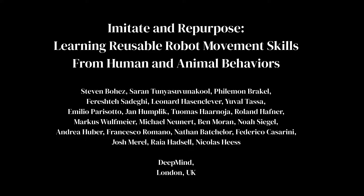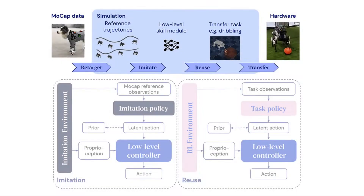In this video we present our work on learning reusable skills for quadruped and biped robots by imitating motion capture data. Our approach consists of two phases. After retargeting the motion capture trajectories to the robot, we first train a single goal-conditioned policy in simulation that is able to imitate all clips.